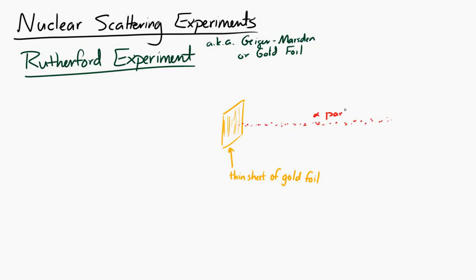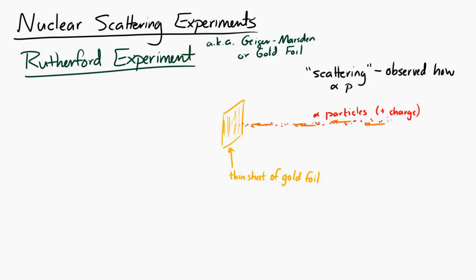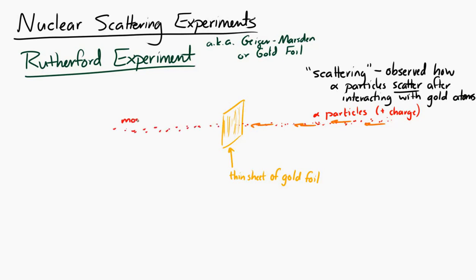These alpha particles have two protons and two neutrons — they have positive charge. This is called a scattering experiment because we're going to observe how the alpha particles scatter after they interact with the gold. What's observed is that most of the alpha particles simply pass through — they are not deflected or changed by interacting with the gold atoms.